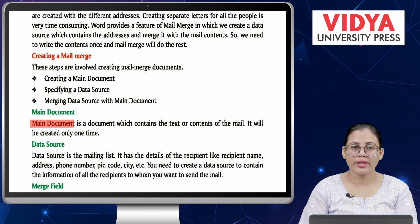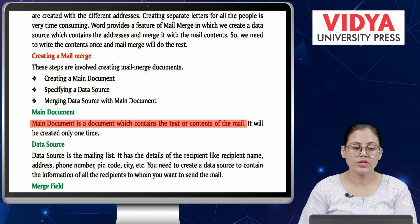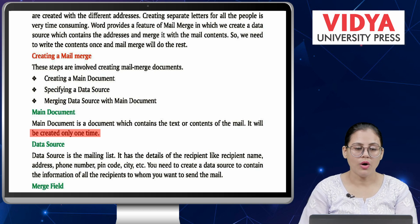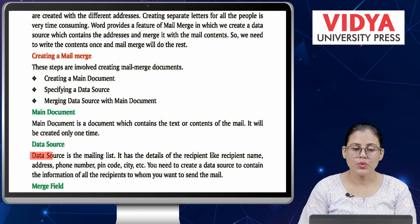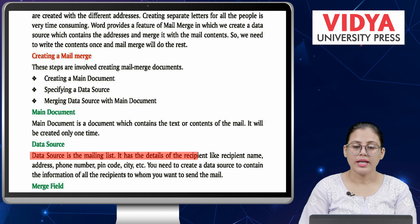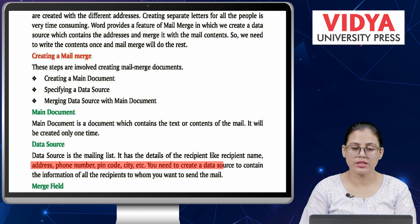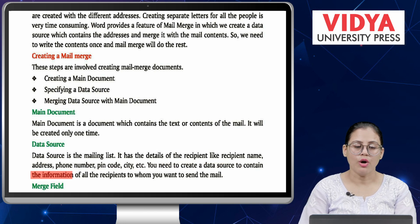Main document is a document which contains the text or contents of the mail. It will be created only one time. Next is data source. Data source is a mailing list. It has the details of the recipient, like recipient name, address, phone number, pin code, city, etc. You need to create a data source to contain the information of all the recipients to whom you want to send the mail.